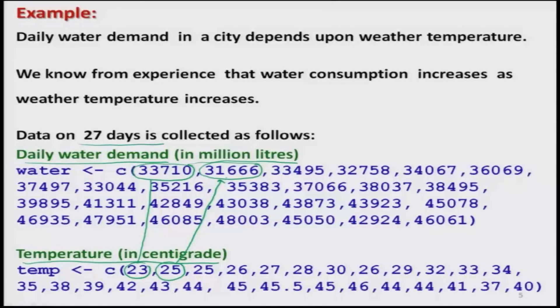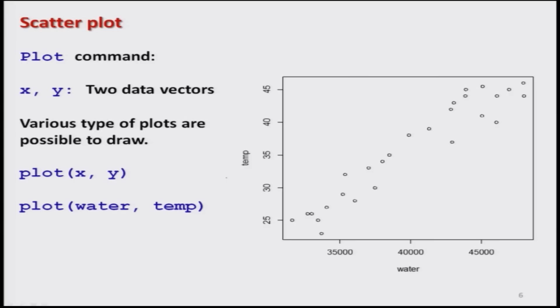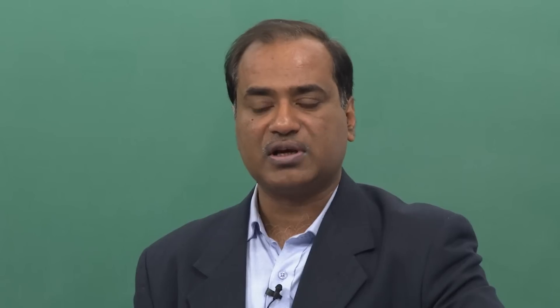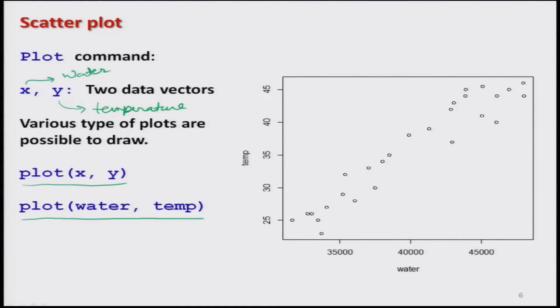We have data on 27 days in summer: daily water demand in million litres and day temperature in centigrade. For example, on day 1, temperature was 23°C and water consumption was 33,710 million litres; on day 2, temperature was 25°C and water consumption was 31,666 million litres. I have stored this data in R. For x I use water data and for y I use temperature data, and I use the command `plot(x, y)`.